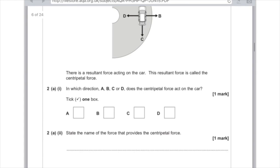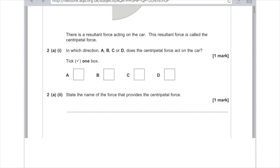State the name of the force that provides the centripetal force. Well, in this case, because it's a car travelling along the road, it's going to be friction, and that will be between the surface of the road and the car tyres. You don't need to write that. Just write friction here for me.